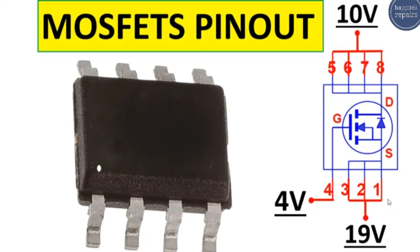When this MOSFET receives a control signal at pin number four — the gate — the current will pass from source to drain. For example, if the gate receives four volts as the control signal, 19 volts will pass through and we get 10 volts at the output. If we receive eight volts at the gate, we get 19 volts; if we receive two volts, we get five volts. The control signal always determines the amount of voltage at the output.